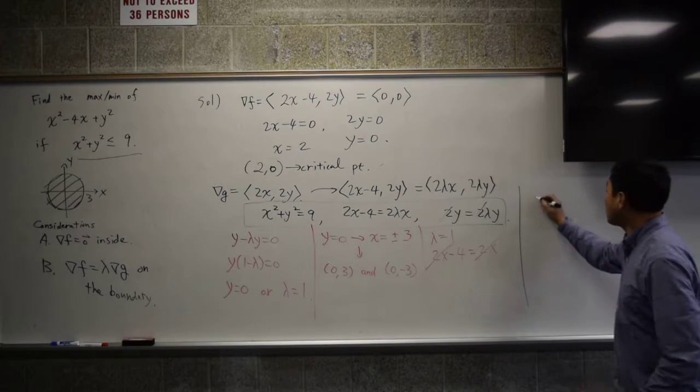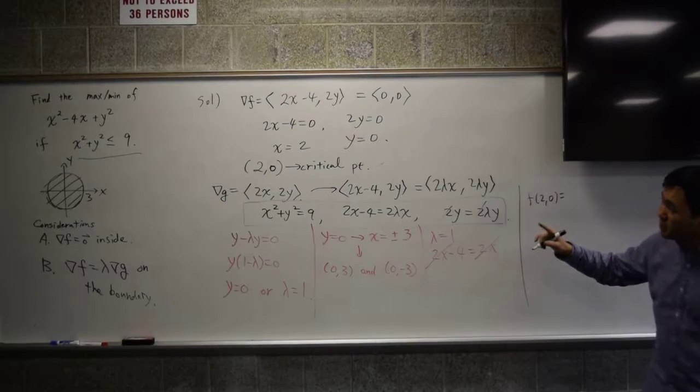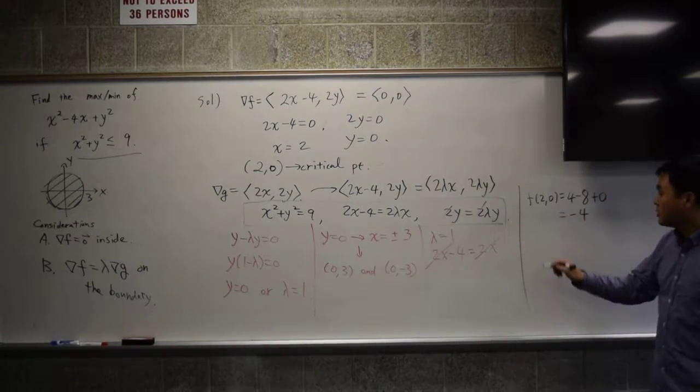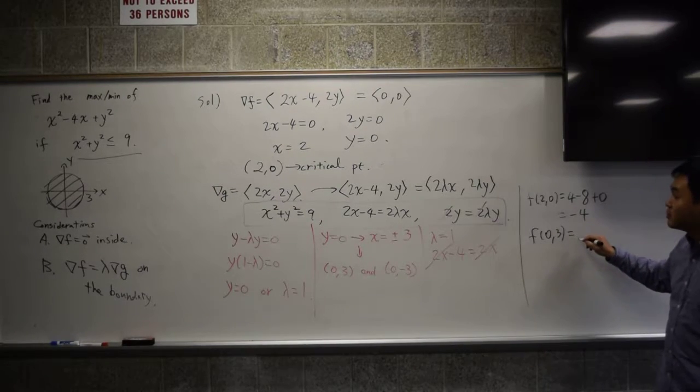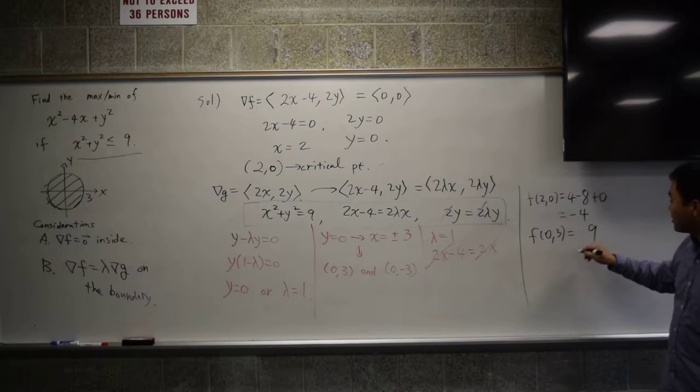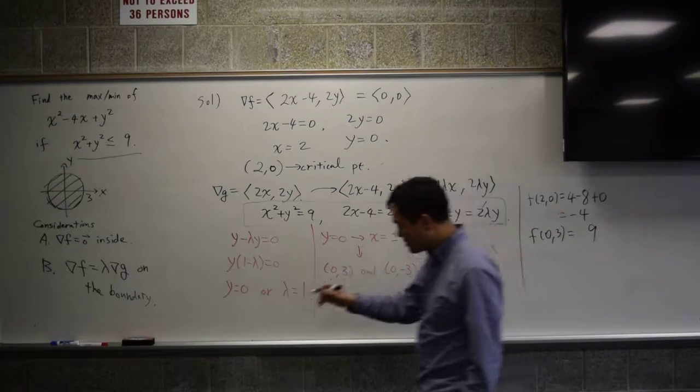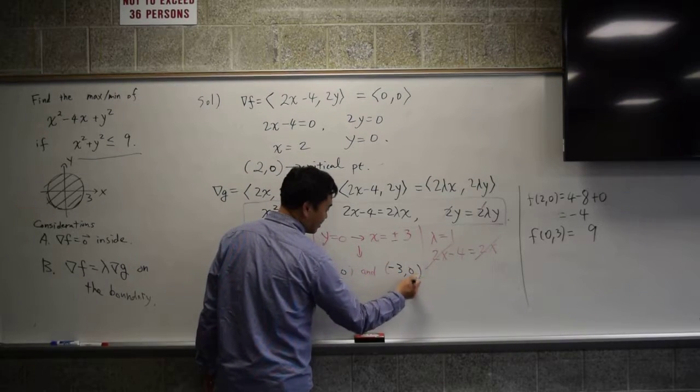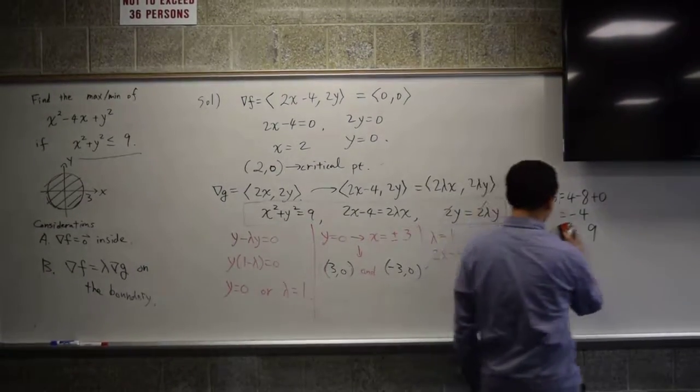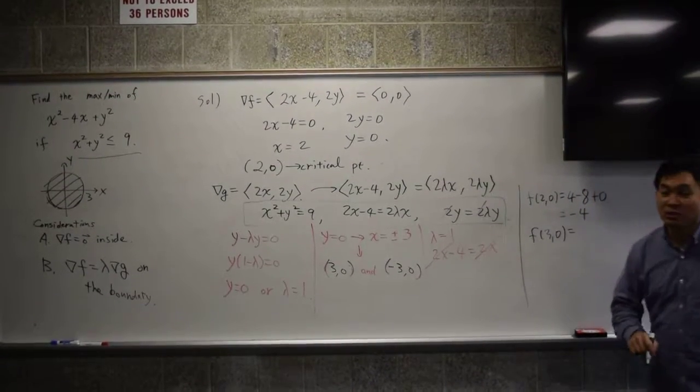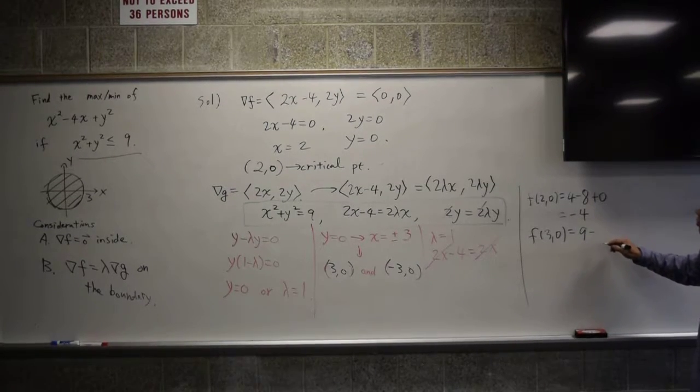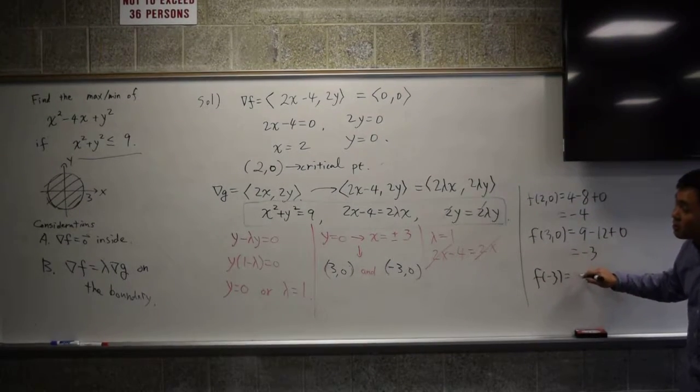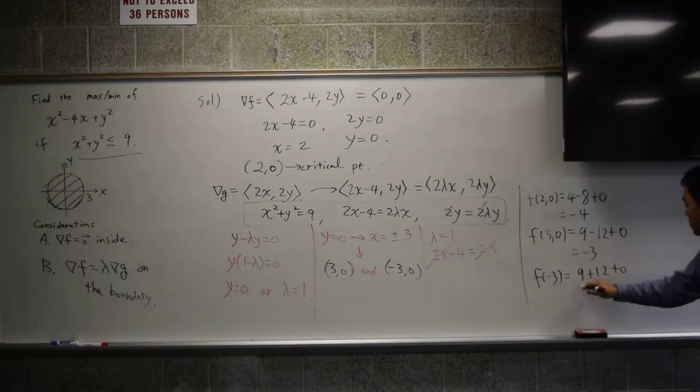So first, what's f of (2, 0)? That's 4 minus 8 plus 0, which is negative 4. Now what's f of (0, 3)? That's just 9. No, sorry, I made a mistake. Something seems strange. Yeah, x is 3. Sorry about that. So f of (3, 0), what's that? 9 minus 12 plus 0, which is negative 3. And f of (-3, 0) is 9 plus 12 plus 0, which is 21.